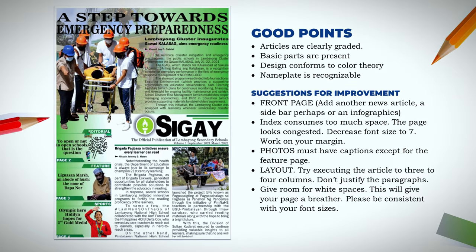The page looks congested — very cramped. The margin has been consumed. What makes it congested is that the font size is inconsistent. You can decrease your font to size 7 — that is acceptable and still readable. What also makes it congested is the use of justified paragraph alignment, because justified text fills all white spaces. Remember that white spaces are also important — they provide breathing room for your article and rest for the reader's eyes. Use justified alignment sparingly, not always.